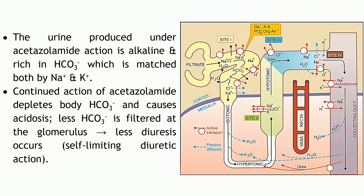So the urine produced is alkaline in nature, rich in bicarbonate, and excretion of sodium and potassium is also promoted. Due to continued treatment with acetazolamide, bicarbonate is continuously excreted, depleting body bicarbonate. Since bicarbonate is an alkali moving out of the body, this results in acidosis.